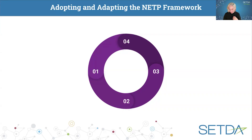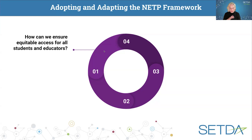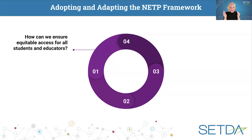What are some things that states can do to adopt or adapt the NETP framework? I put this in the lens of questions, and it's cyclical and iterative. These questions are all connected to one another. This is not a one-and-done — you're not going to go out and buy machines and access for everybody and then consider yourself done. You need to continue to keep working through this.